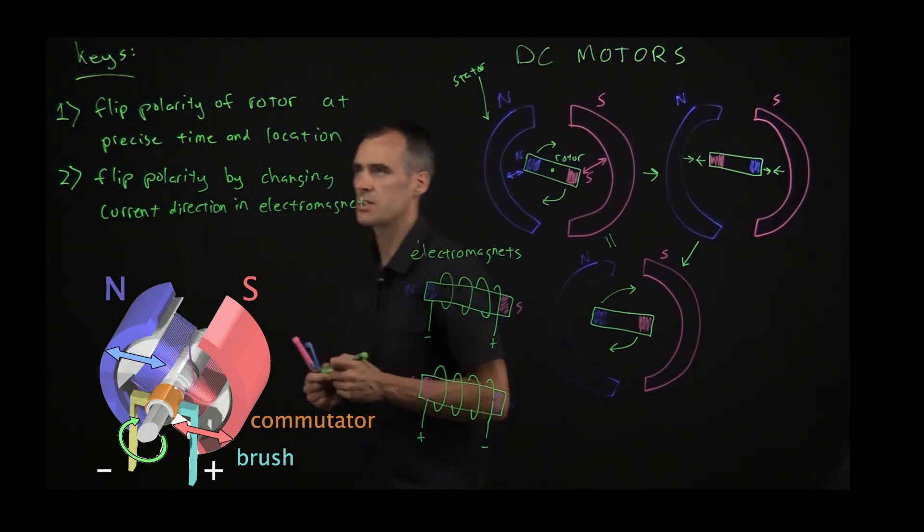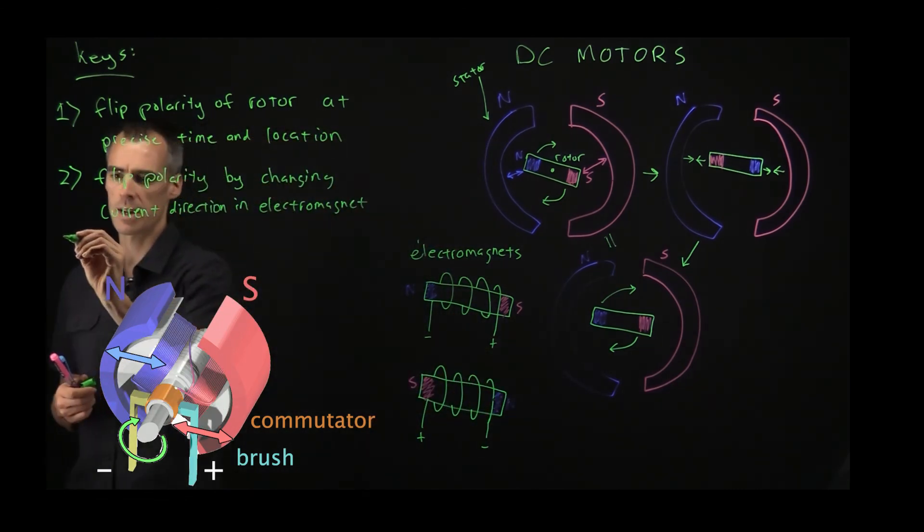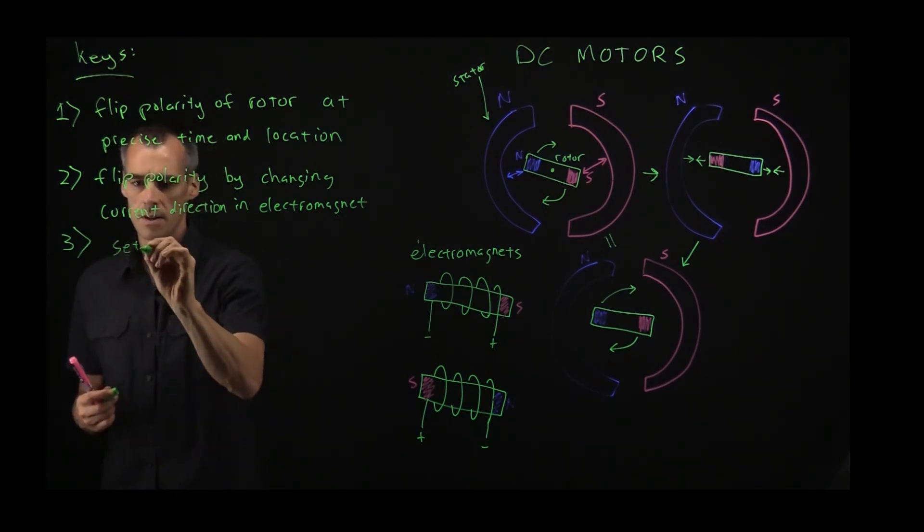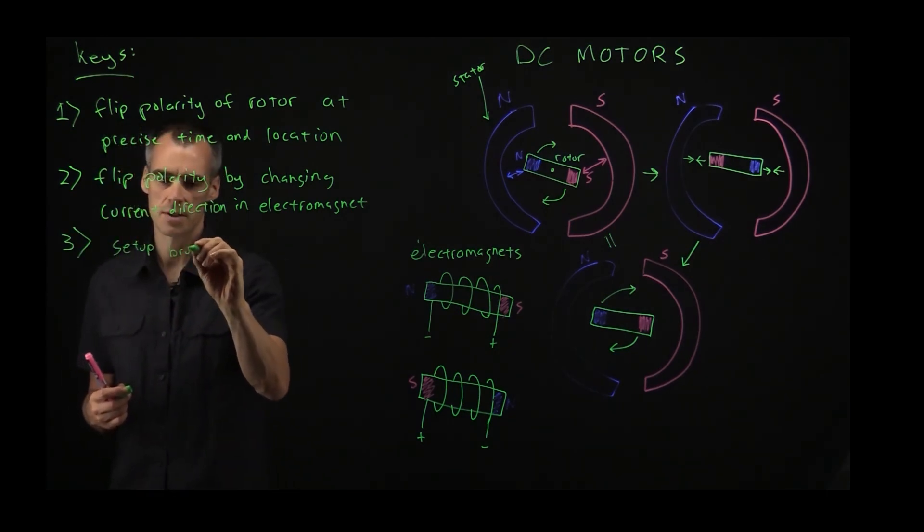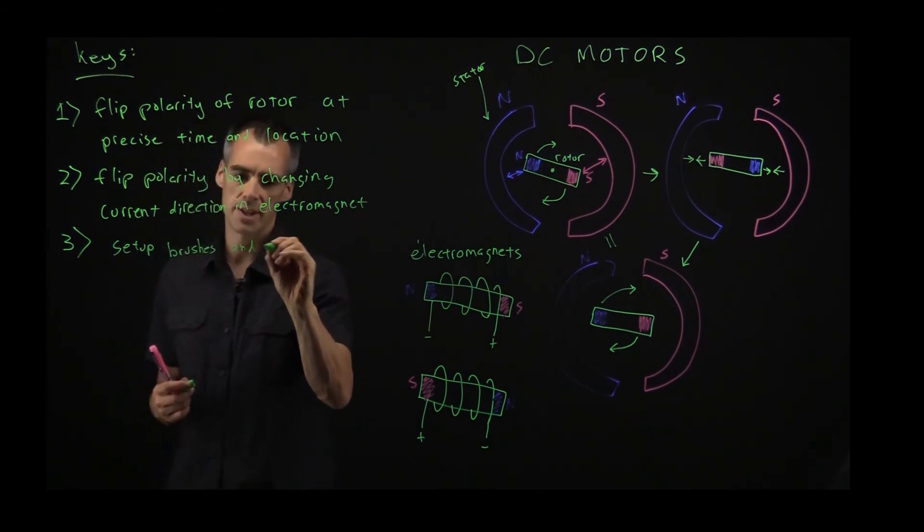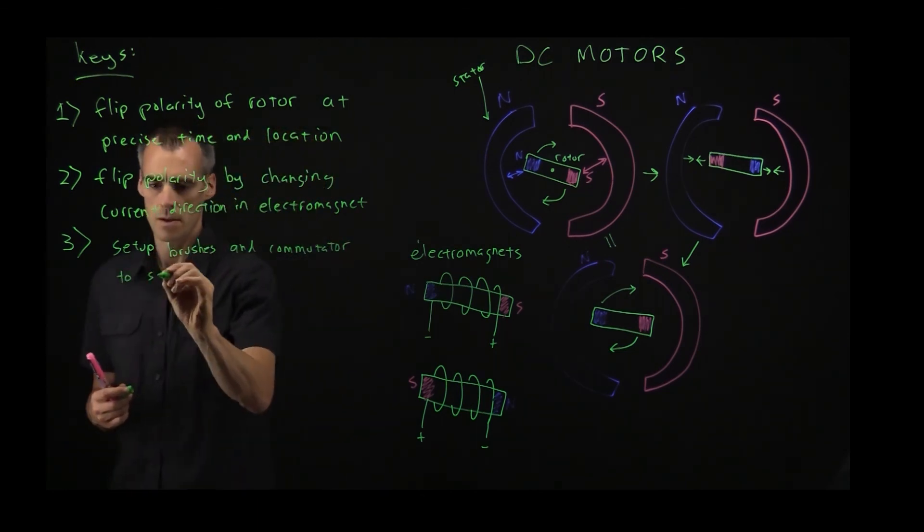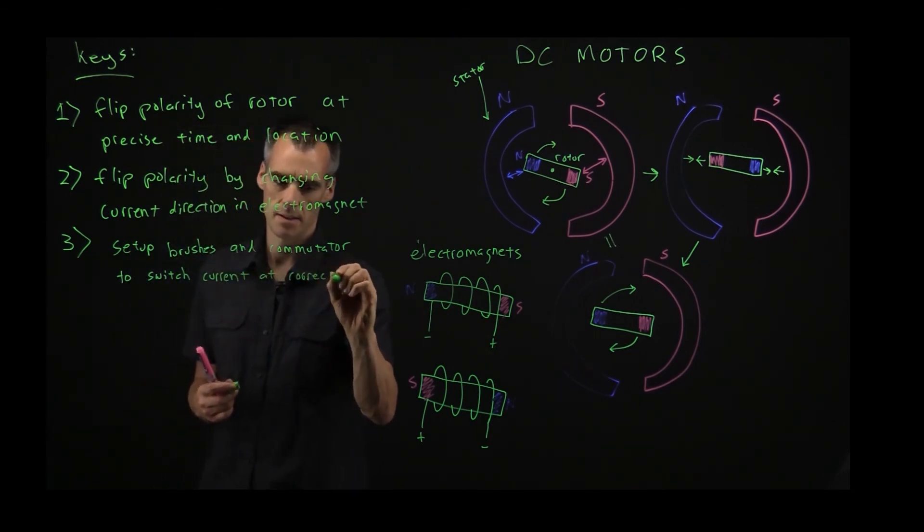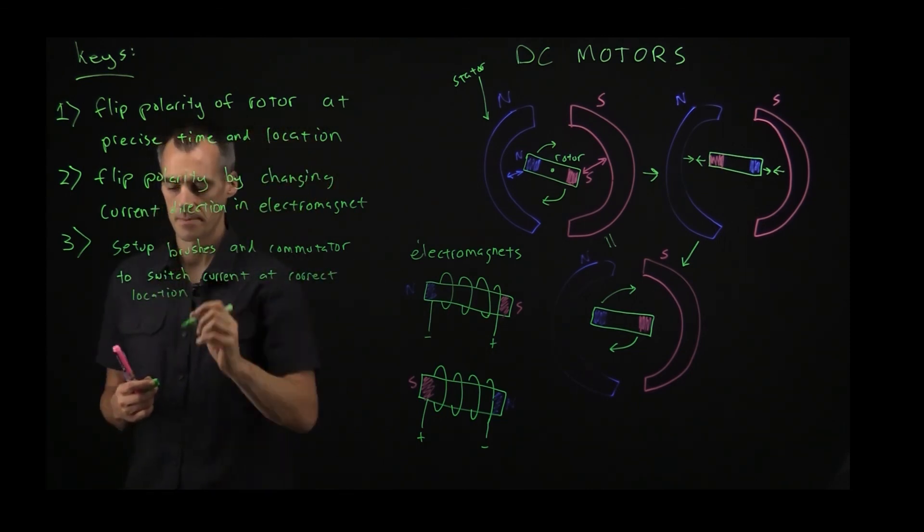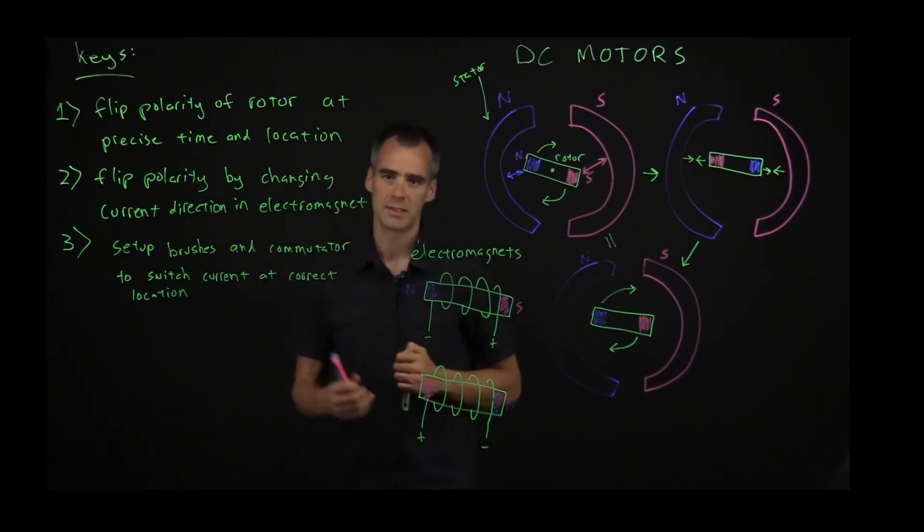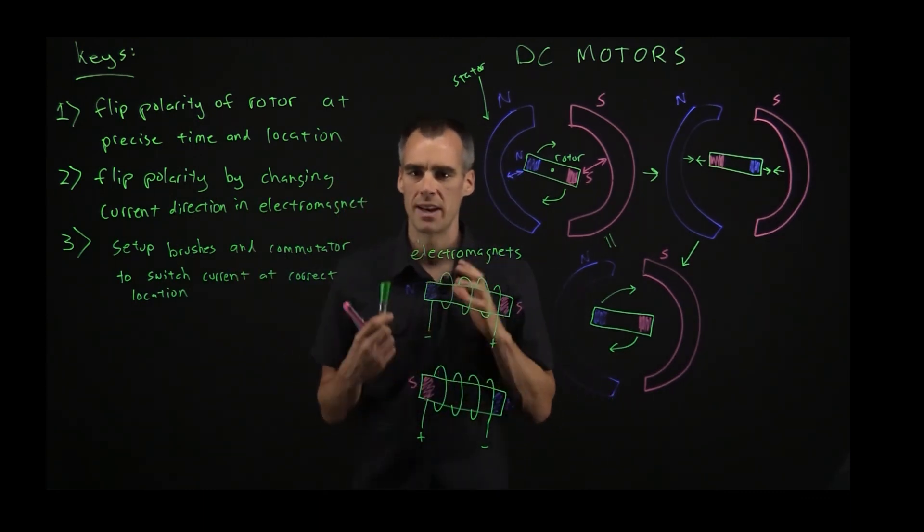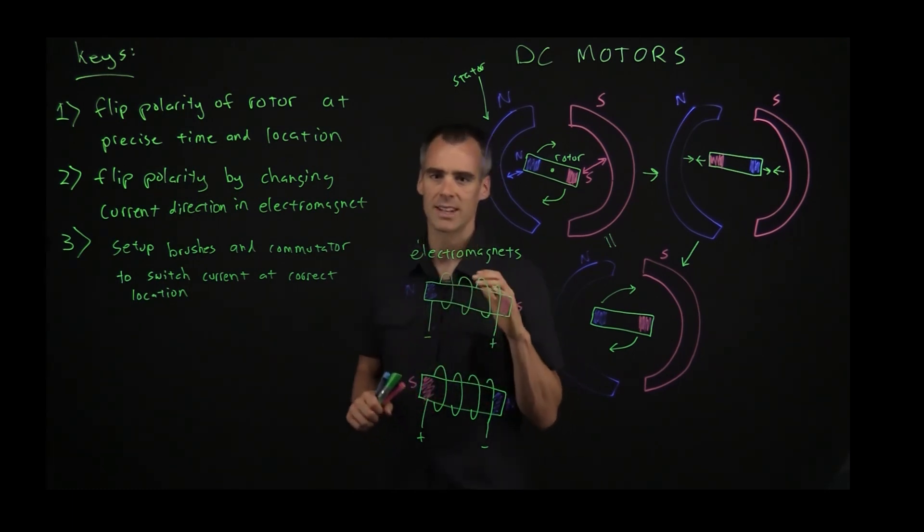So that leads us to what I would say is key number three which is to set up the brushes and commutator to switch current at correct location. And those are really the three keys to a DC motor. So I hope that helps you just kind of appreciate the basics of how these work. But until next time, take care.